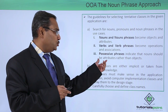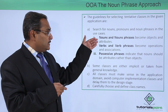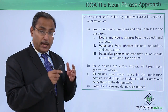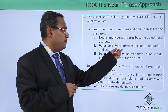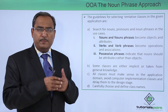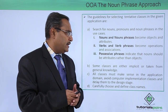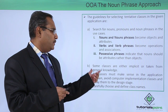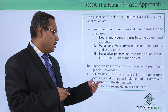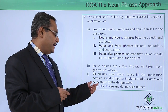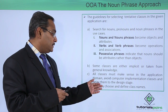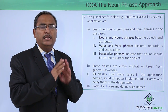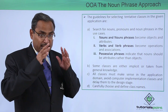Possessive phrases indicate that the noun should be an attribute rather than an object. Nouns and noun phrases become the objects and attributes of the class, and verbs and verb phrases become the operations and associations — where operations means methods. Some classes are either implicit or taken from general knowledge. All classes must make sense in the application domain. Avoid computer implementation classes and delay them to the design stage, ensuring no redundancy and that all aspects of the design are covered.